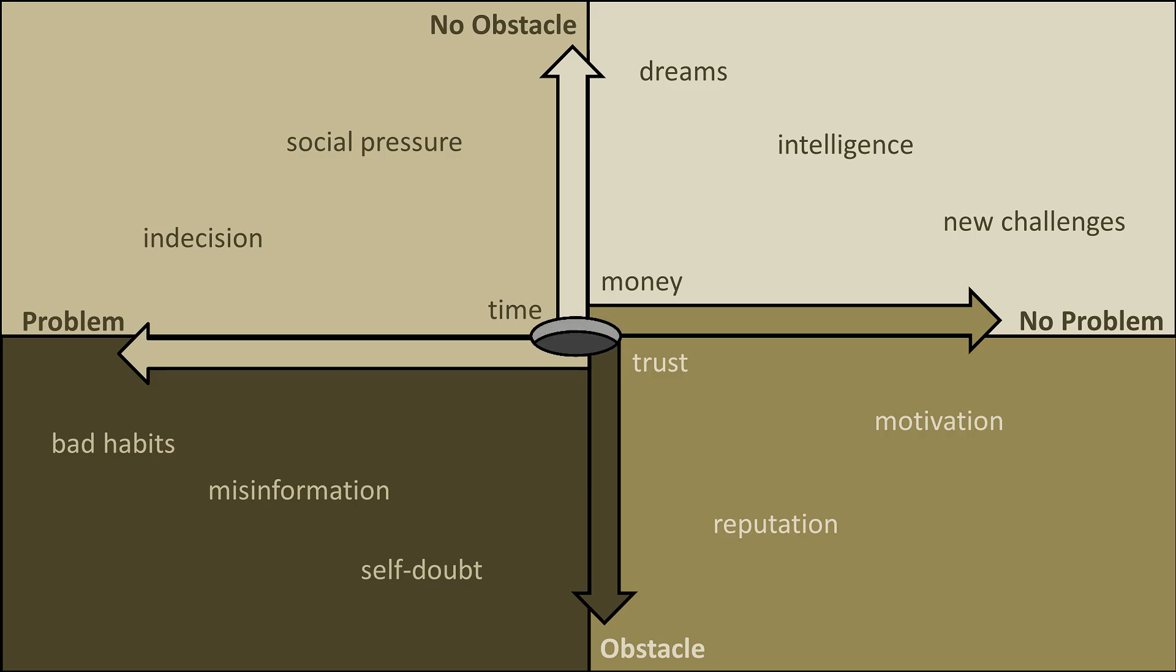Let us take a look at the 2x2 grid of problems versus obstacles. Bad habits are definitely more like a problem than an obstacle, whereas your reputation is more like an obstacle. I'm not sure that this 2x2 makes any sense.